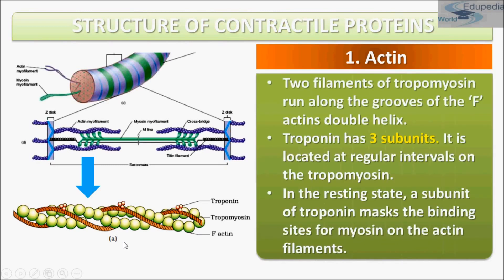Two filaments of tropomyosin run along the grooves of the F-actin double helix. Troponin is made up of three subunits and is located at regular intervals on the tropomyosin — note that troponin is present on tropomyosin and not on F-actin itself. In the resting stage, a subunit of troponin masks the binding site for myosin on the actin filament.